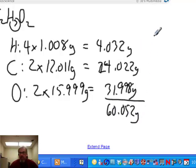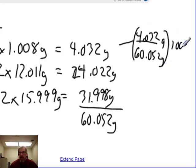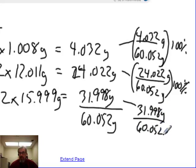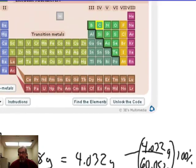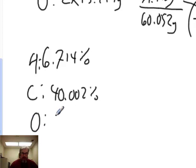To find the percent of each element: for hydrogen, take 4.032 divided by 60.052 grams, multiplied by 100, giving 6.714% hydrogen. For carbon, 24.022 grams divided by 60.052 grams expressed as a percent gives 40.002%. For oxygen, 31.998 grams divided by 60.052 grams times 100% gives 53.284%.